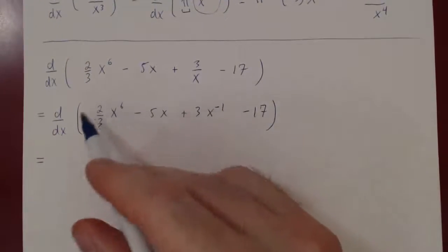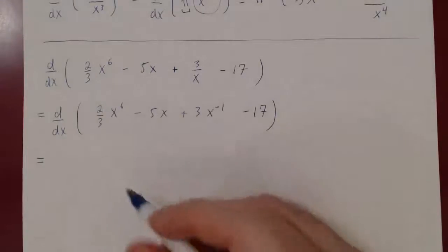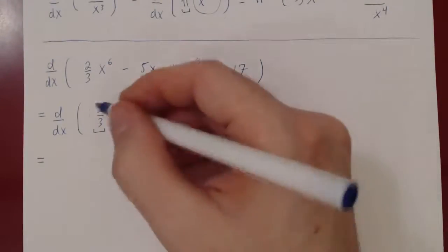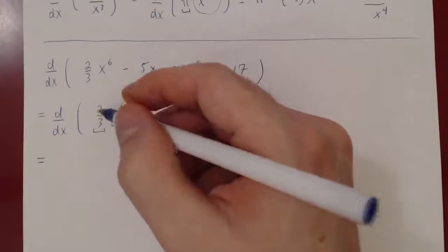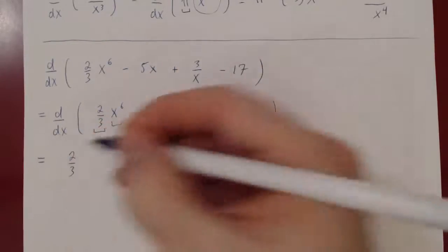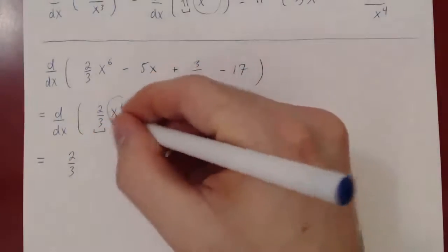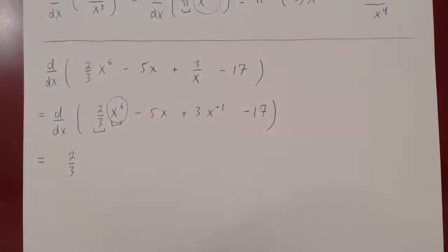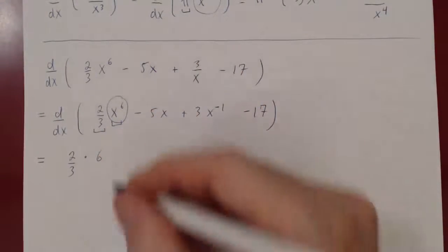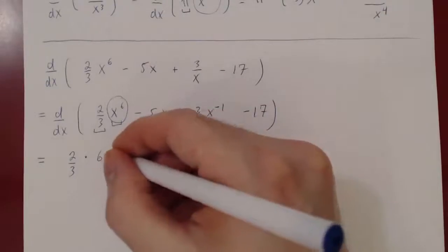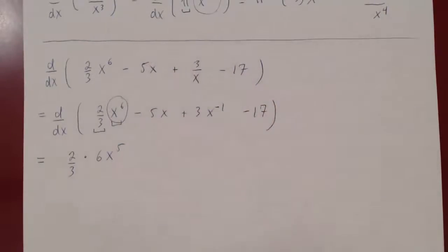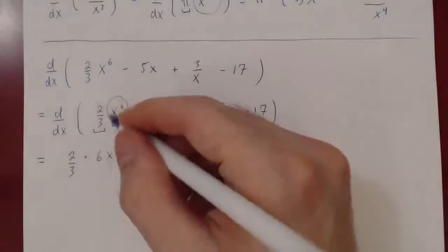For the first term, the derivative of 2/3 times x to the 6th: 2/3 is a constant multiple so it stays, giving 2/3 times the derivative of x to the 6th. Using the power rule, we bring the power down, giving 2/3 times 6 times x to the 5th, which is the derivative of the first term.